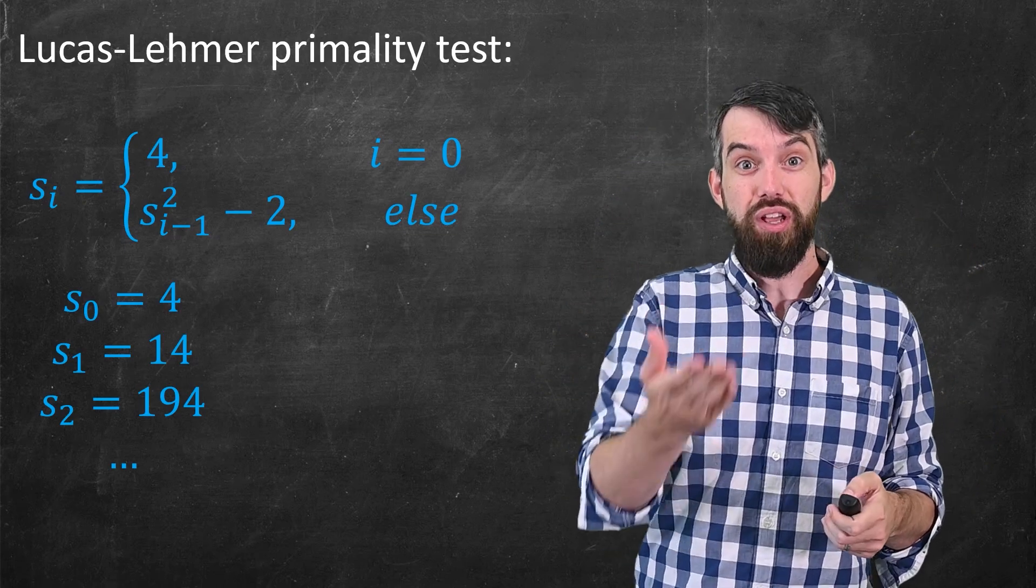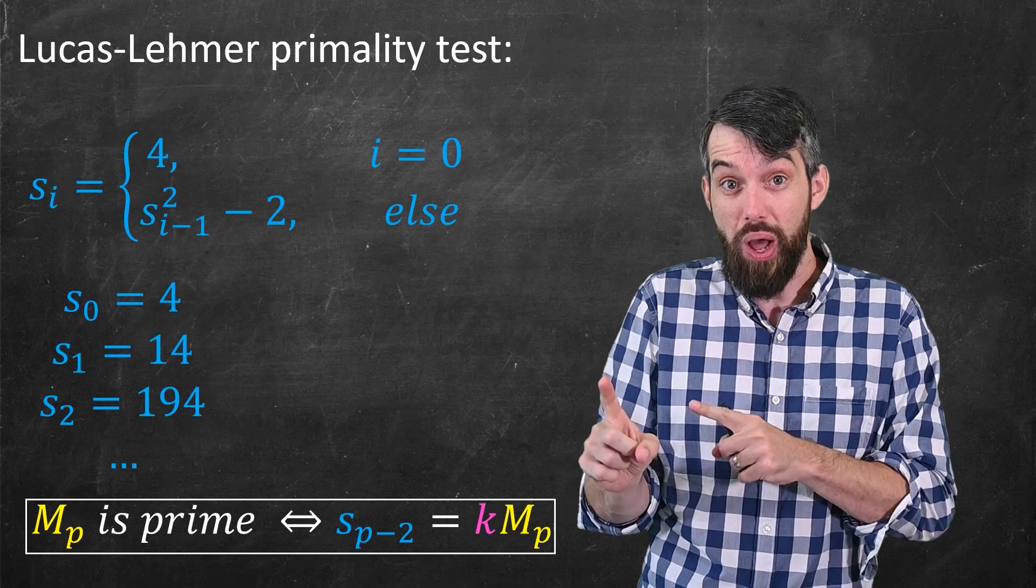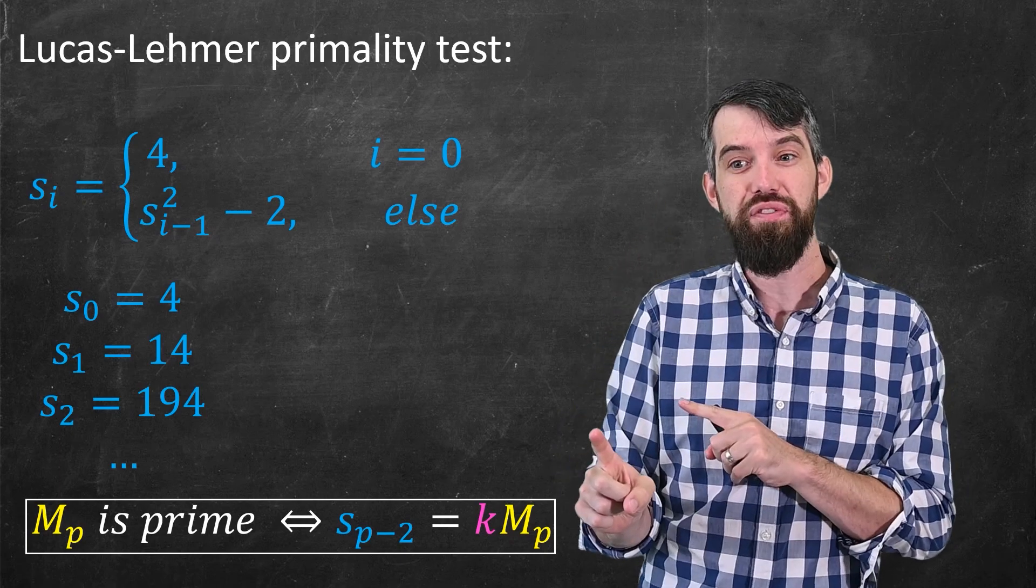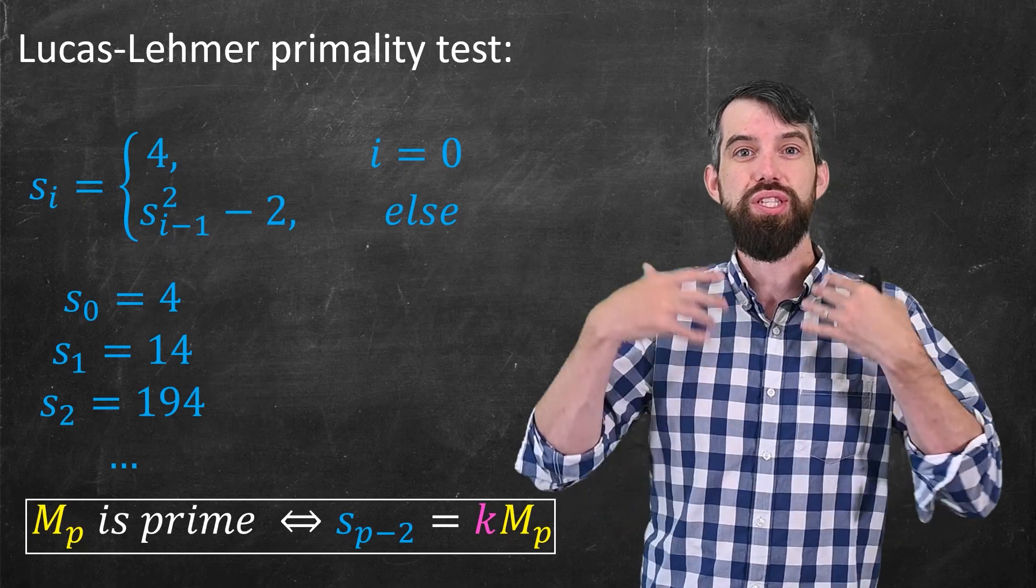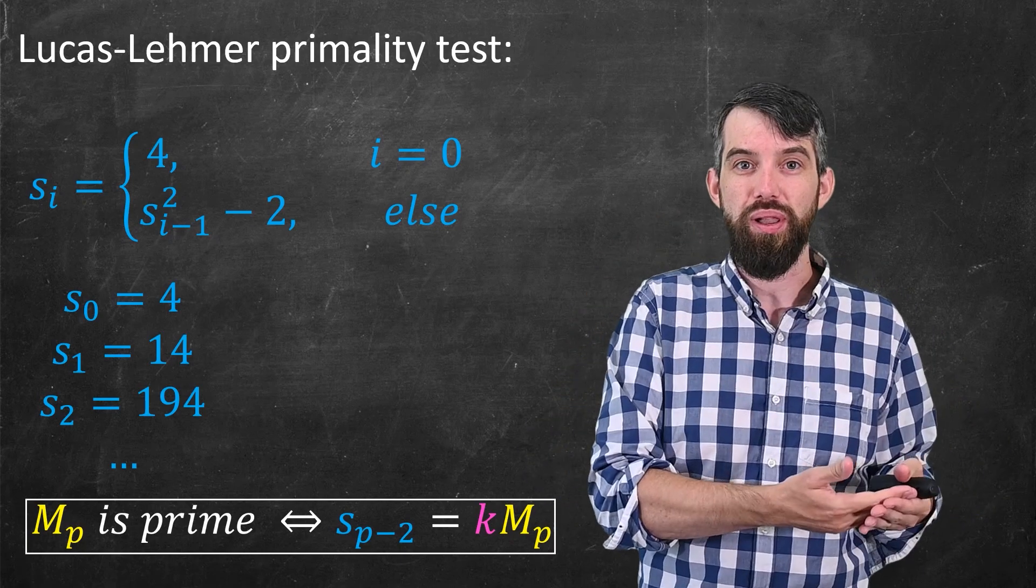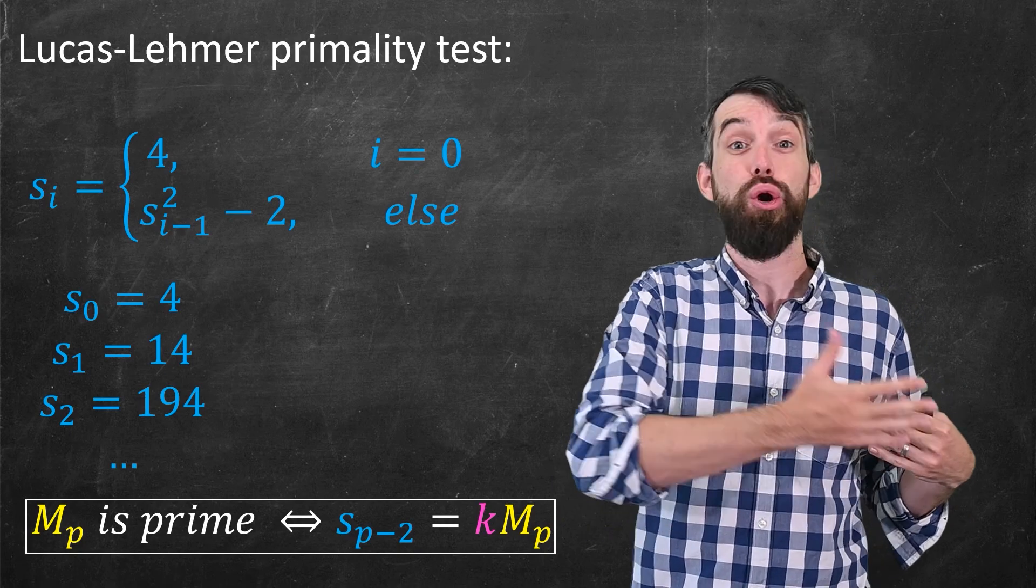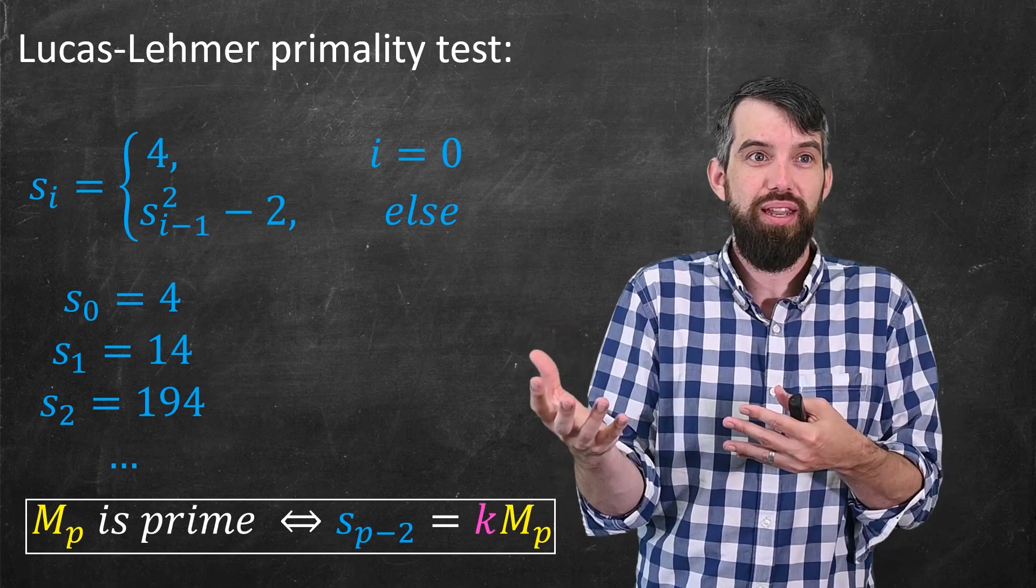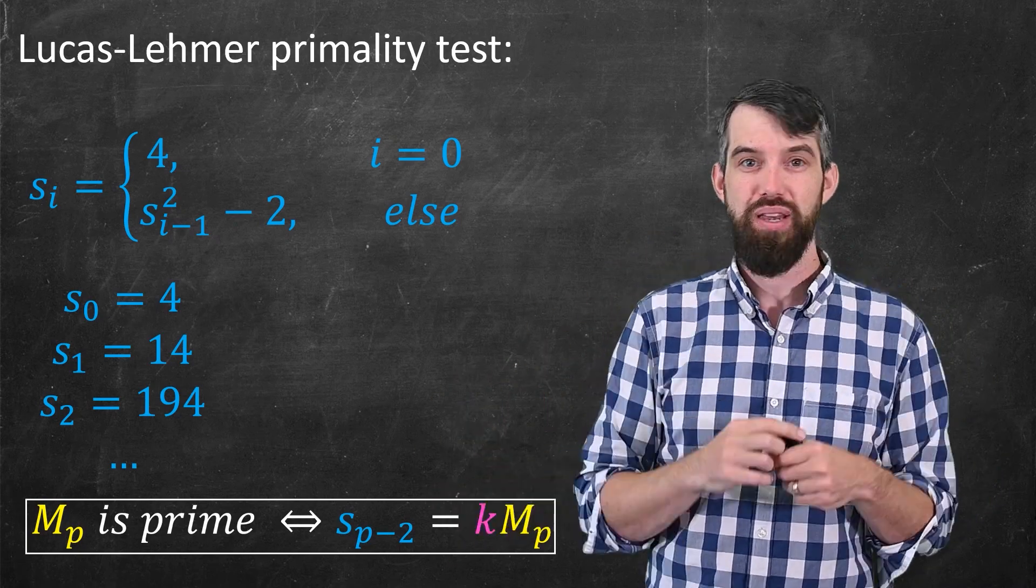You get this big sequence. The claim then is that the Mersenne number M_p, it is prime if and only if the term of the sequence s is just some integer multiple of that Mersenne number. As in, you take your s, this term in the sequence, and you say, well, is it like three times or four times or five times the Mersenne number that you computed?